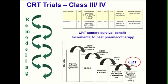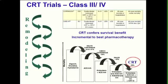The initial trials really addressed class 3 and class 4 heart failure, and the major ones were COMPANION and CARE-HF. CRT was found to confer a survival benefit, importantly incremental to best pharmacotherapy. We have the various drug trials that have come through with ACE inhibition, beta blockers, and aldosterone inhibitors, all of which have impacted heart failure mortality. But CRT is additional to that — it improves mortality from those trials by more than 30% in this group. So it's a very important therapy.